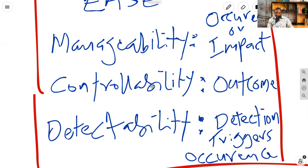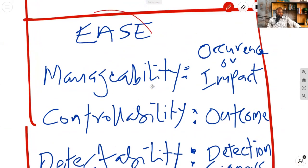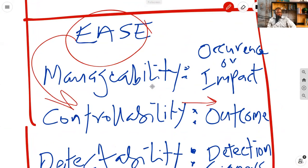It says, where the outcome can be easily controlled, controllability is high. So you want to think about ease again. Ease of controlling the outcome.